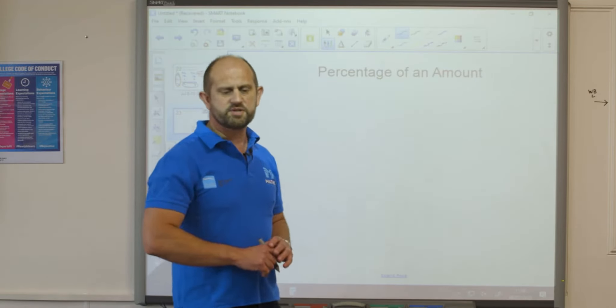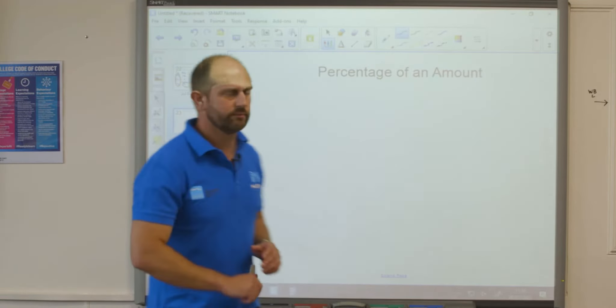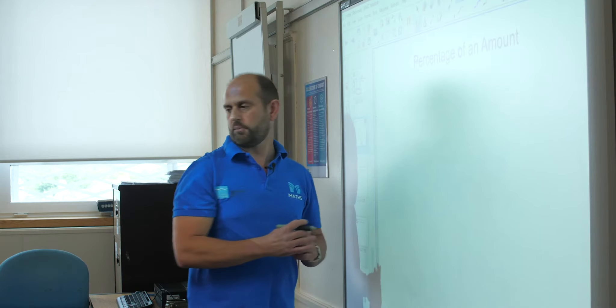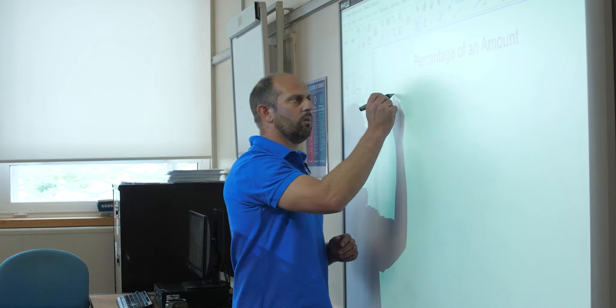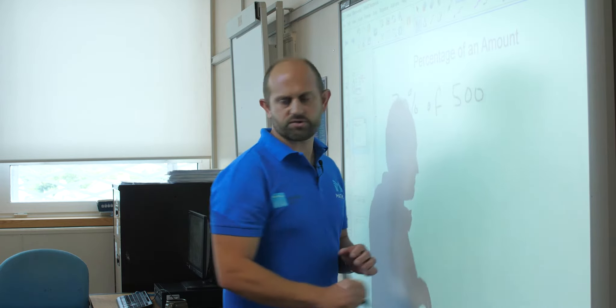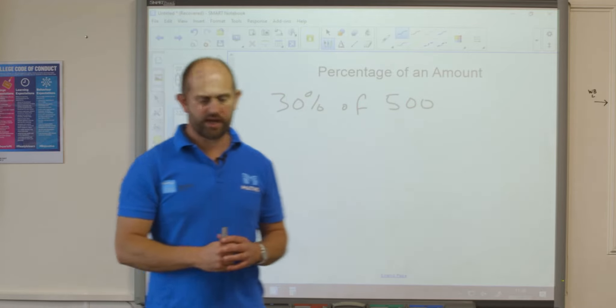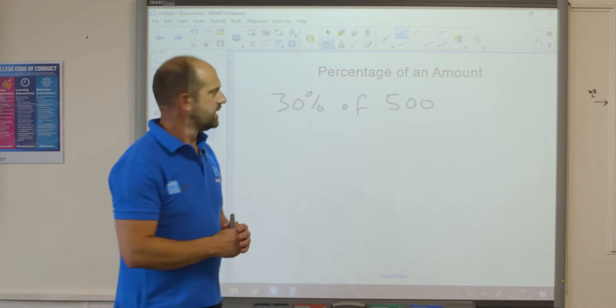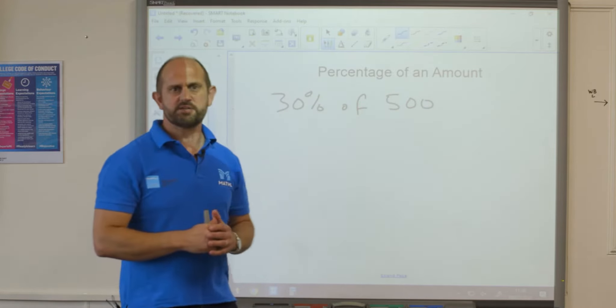Okay, so next we're going to look at finding a percentage of an amount. The first example we're going to look at is finding what 30% of 500 is without using a calculator. To do this we're going to break it down into parts.